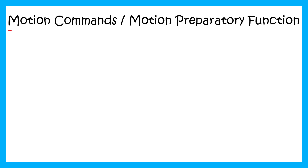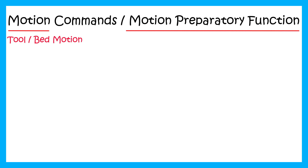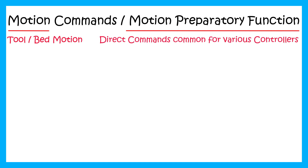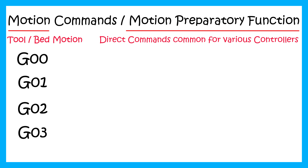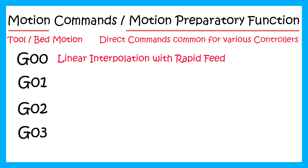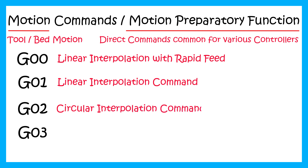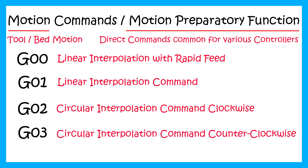In order to move a tool in a CNC machine, we use one of the four G-codes available. These codes are directly involved in tool motion. These four codes are G00, G01, G02, and G03. G00 is known as rapid traverse command or linear interpolation with rapid feed. G01 is known as linear interpolation command. G02 is known as circular interpolation command clockwise and G03 is known as circular interpolation command counterclockwise. We will try to understand these codes with one example.